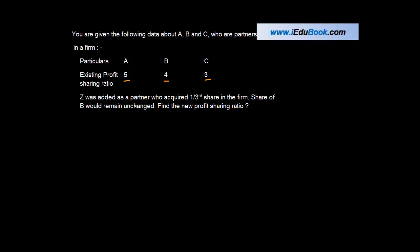Z was added as a partner who acquired one-third share in the firm. Share of B would remain unchanged. Find the new profit-sharing ratio. Now this question is a little different from what you have done till now.